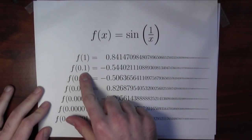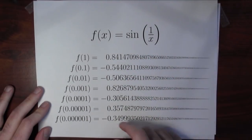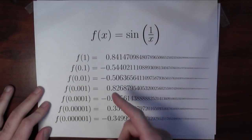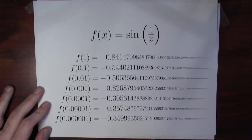f of 0.1, which is really sine of 1 over 0.1, sine of 10, is negative 0.5. f of 0.01, which is really sine of 100, it's also about negative 0.5.